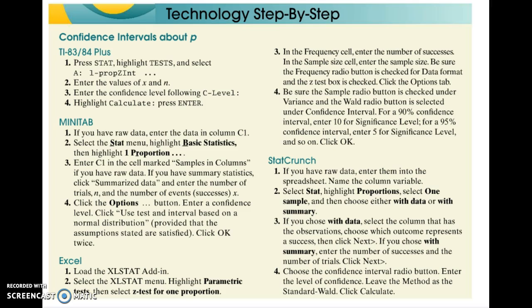Page 439 of the textbook shows how to use technology to create confidence intervals for population proportions. I'm going to work through an example showing how to do it with StatCrunch. If you prefer to use a different method of technology, refer to page 439.